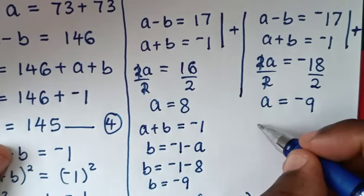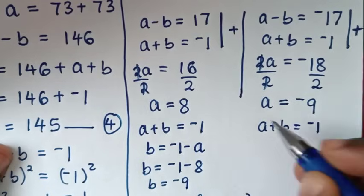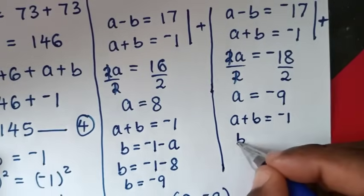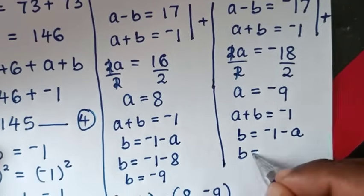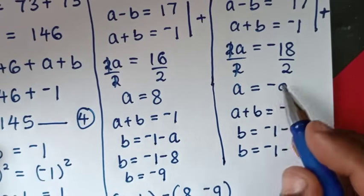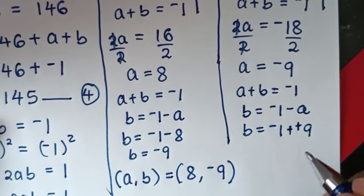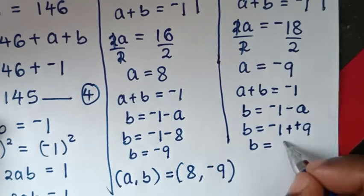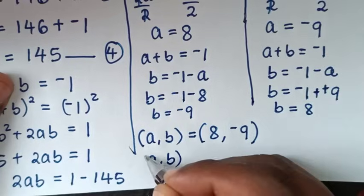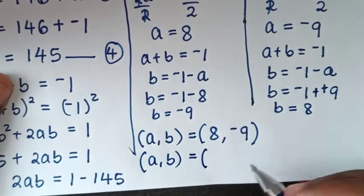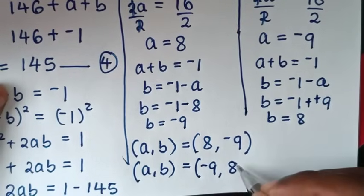Using equation 3 again for the second solution with a equals negative 9: b equals negative 1 minus a equals negative 1 minus negative 9. Negative minus negative is positive, so b equals 9 minus 1, which is 8. Therefore the second solution is a comma b equals negative 9 comma 8.